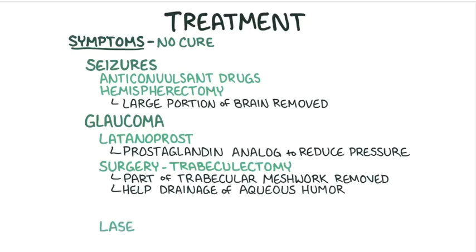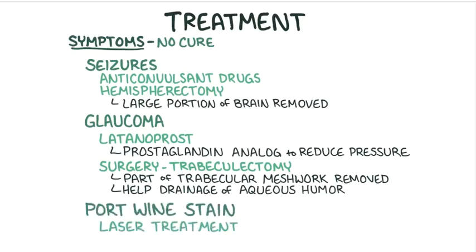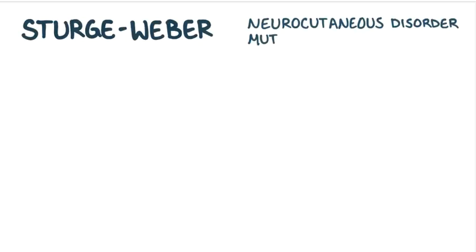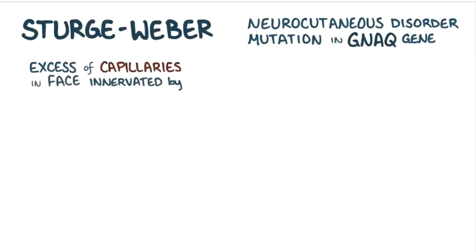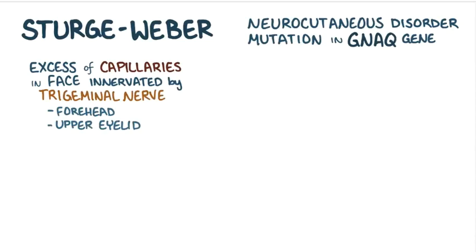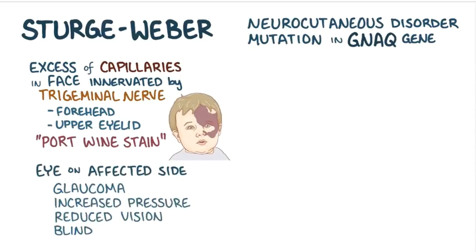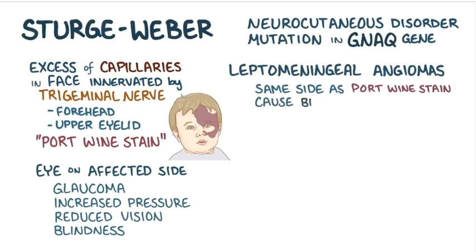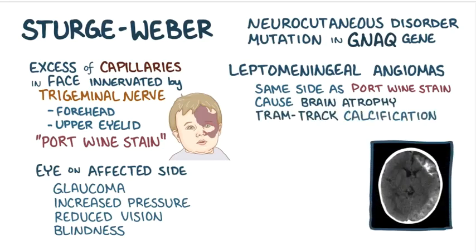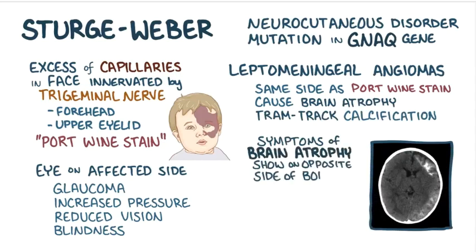For aesthetic reasons, laser treatment can be used to lighten or remove the port wine stain. As a quick recap, Sturge-Weber syndrome is a neurocutaneous disorder caused by a mutation in the GNAQ gene, resulting in excess capillaries in areas of the face innervated by the trigeminal nerve — typically the forehead and upper eyelid — causing a port wine stain. The eye may develop glaucoma, and leptomeningeal angiomas on the same side can cause brain atrophy, tram-track calcifications, seizures, muscle weakness, and developmental delay.